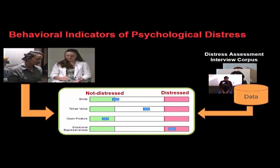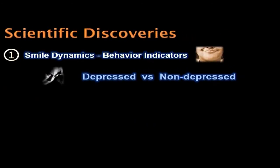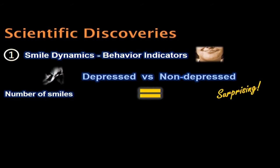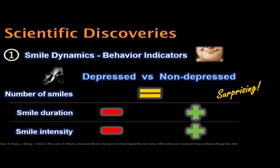Over six years, we now have a dictionary of about 22 to 25 behavior markers covering depression, anxiety, PTSD, schizophrenia, and suicidal ideation. The first discovery was about depression and smile — the most seemingly obvious one. People who are depressed most likely smile less. But surprisingly, over 150 patients, the number of smiles was almost exactly the same. What changed is the dynamic of the smile: shorter smile, less amplitude. Because of social norms, people still smiled, but they probably don't feel it, so their dynamic changed.